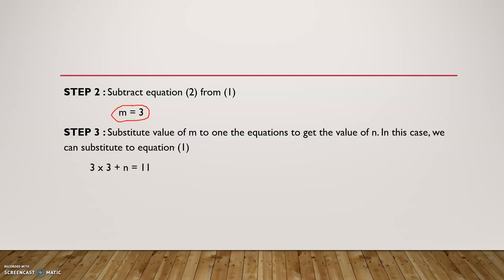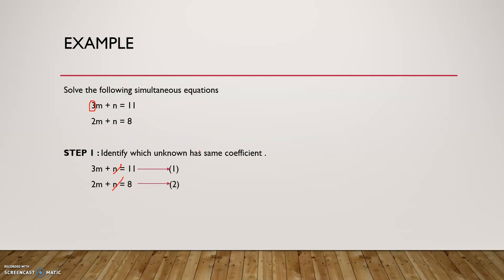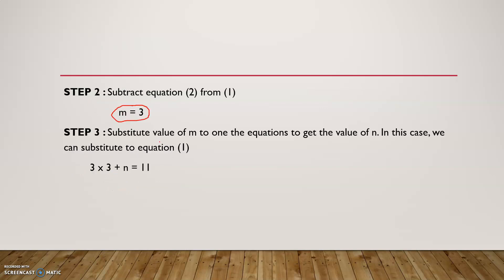Now we need to work out the value for n, because we are looking for both values. We can substitute the value of m into one of the equations to get the value of n — it doesn't matter which one. Using equation 1, which is 3m plus n equals 11, we substitute m equals 3 to get 3 times 3 plus n equals 11.